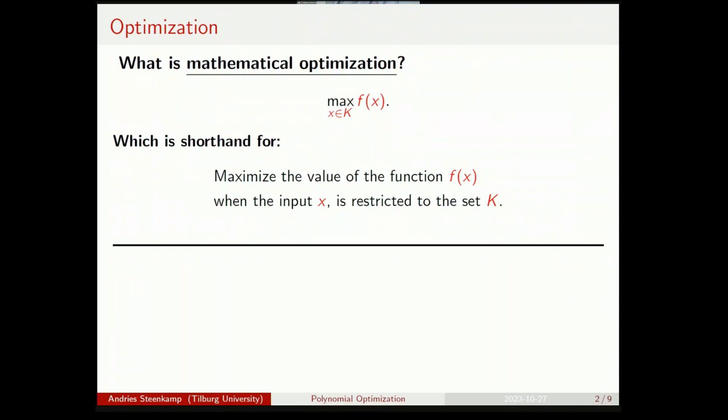So, kort geschreven daar sien jy, daar is so'n esoterische wiskindige uitdrukking daarboe, en dit is kort hand vir maksimeer die waarde van die funksie F, door die rechte inzette te kies X, so dat die uitzette F van X die beste is in een of haar sin, maar jy is net toegelaat om jy inzette te kies van gekoese versameling K.